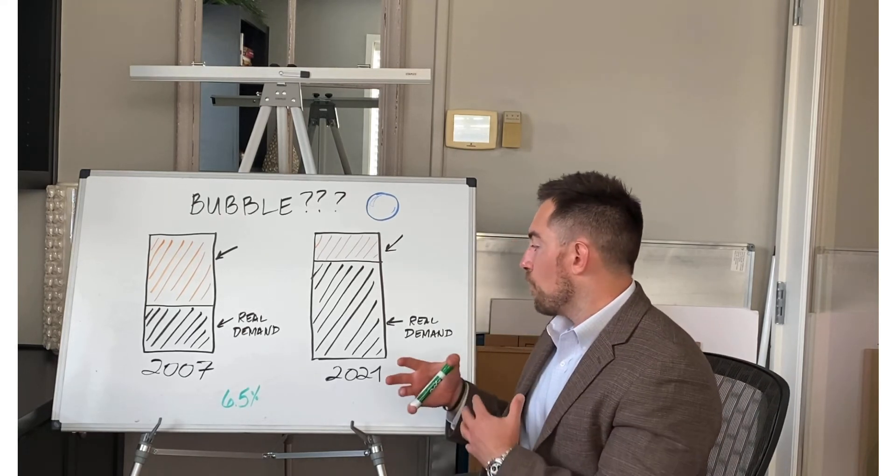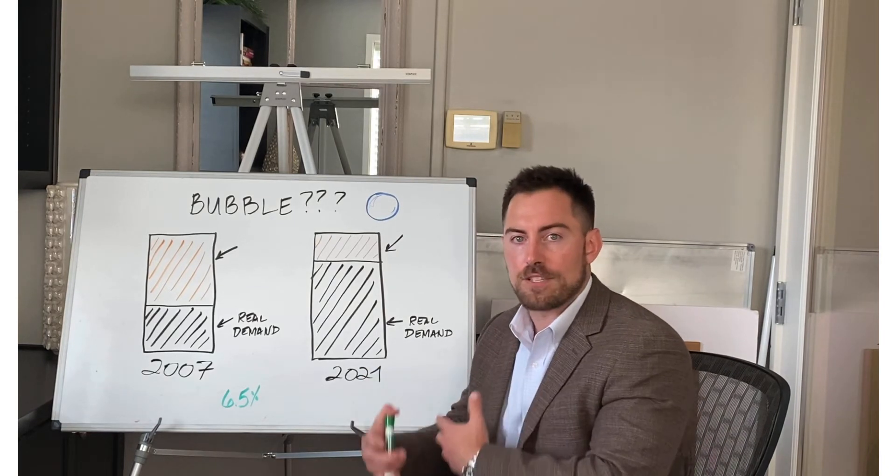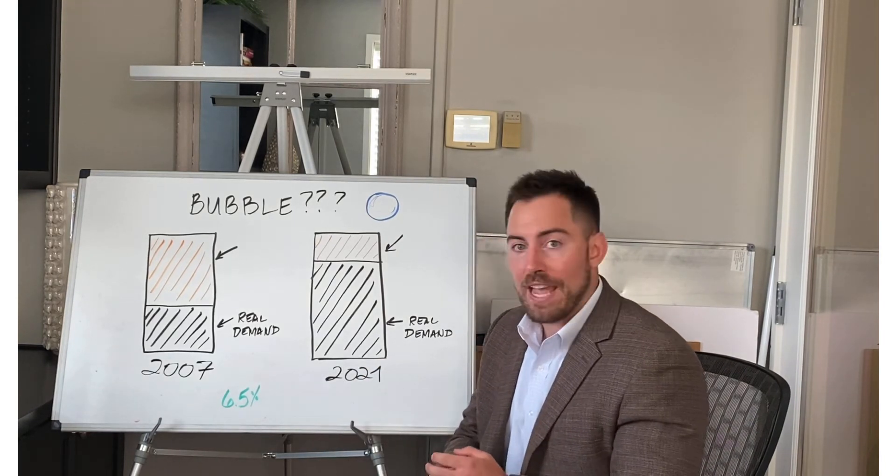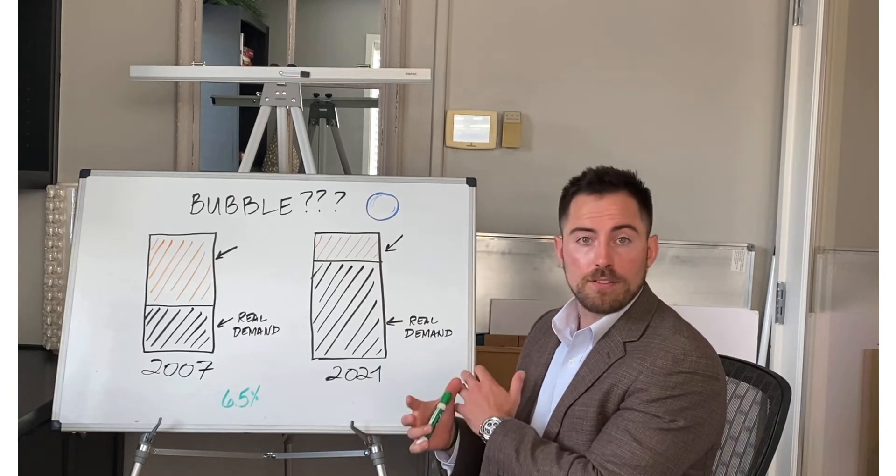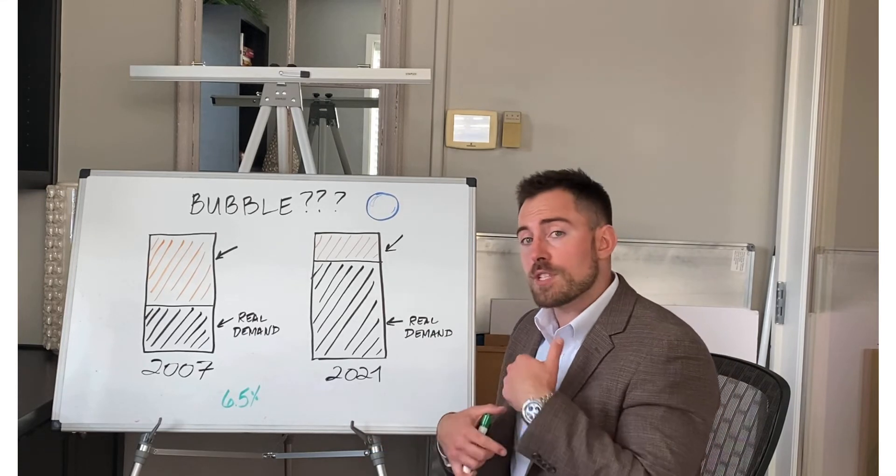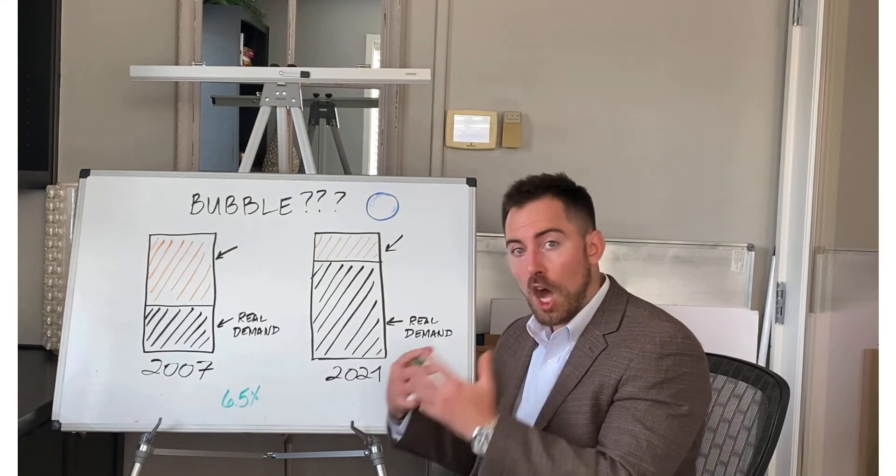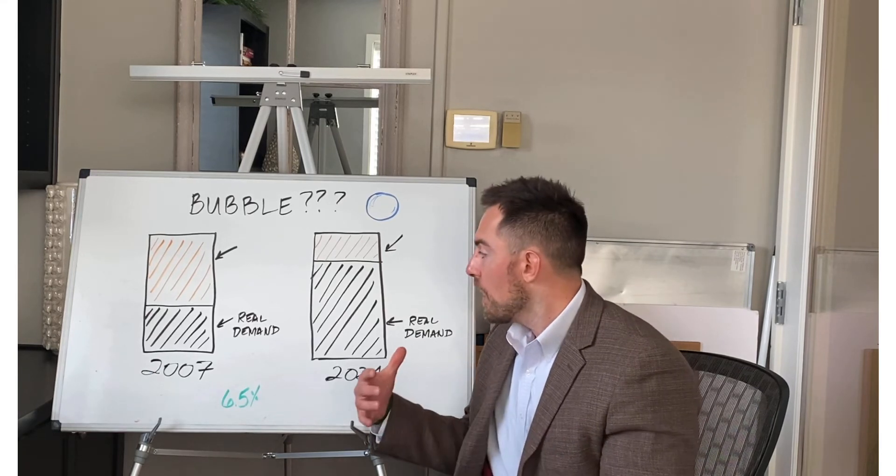So in order to see where we're at now, you need to know what exactly caused the last bubble. The last recession we had was real estate related. The one that we have coming up, it's coming soon, probably sooner rather than later. It's not going to be real estate related. Real estate will be affected, but it will not be the cause of that recession, like 2007.